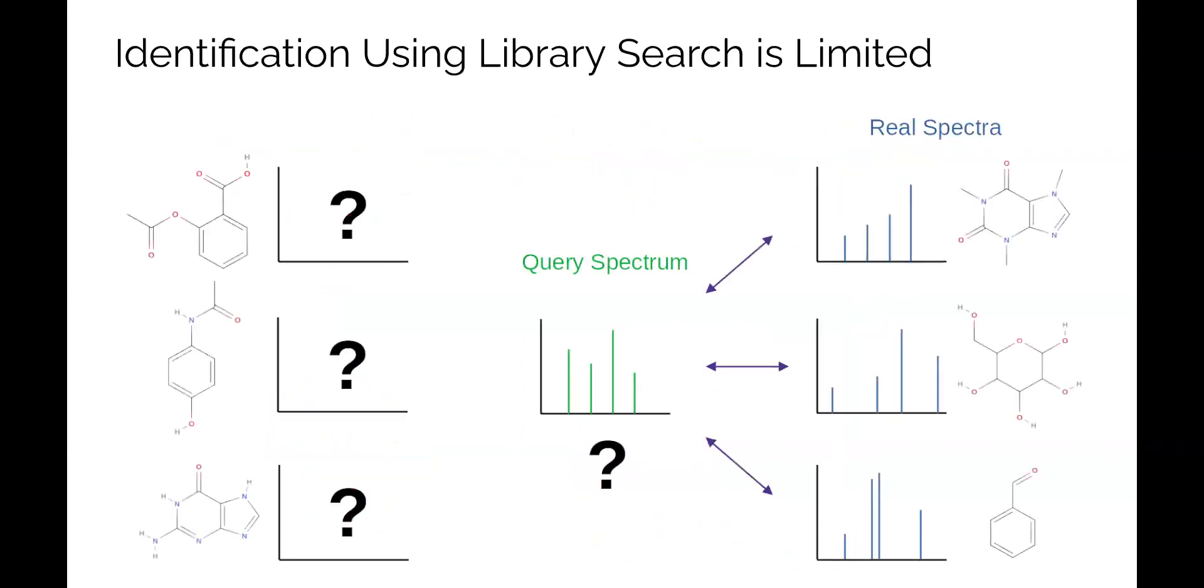A major application of mass spectrometry in life sciences is compound identification. In metabolomics and natural products research, MS is the primary tool for identifying small molecules. The most common way to identify compounds with mass spectrometry is to compare the unknown query spectrum against a library of real experimentally acquired reference spectra. If the query is highly similar to one of the reference spectra, it is possible to recover the identity of the associated structure.